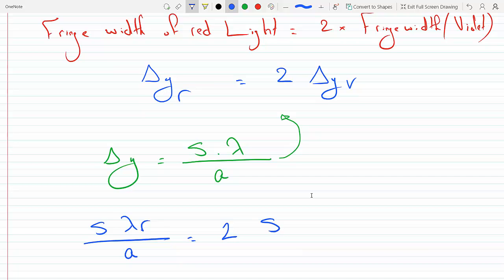Now the s, the distance, will be the same because they're at the same location. And also the distance between the two slits will be the same regardless of what color we have. The only difference will be in the wavelength, so that's v.